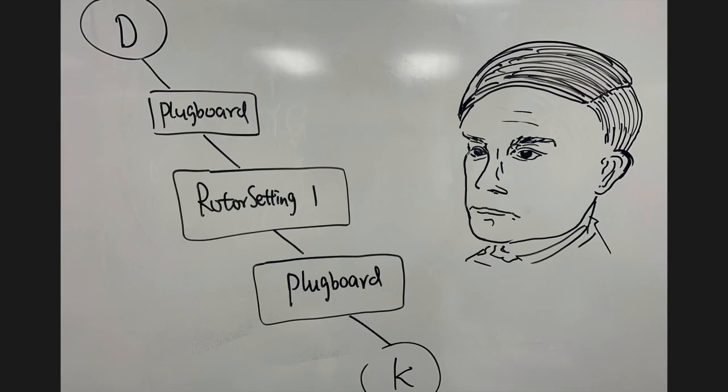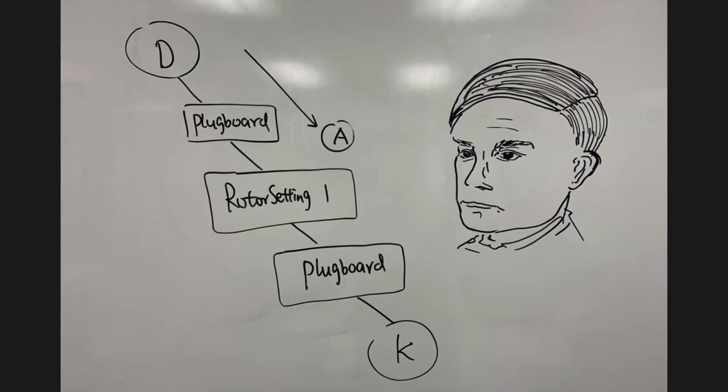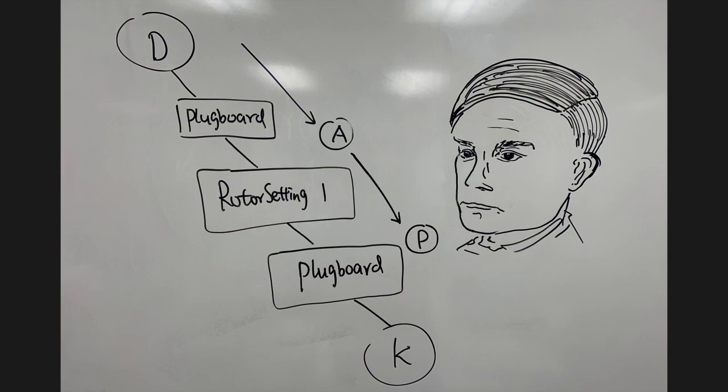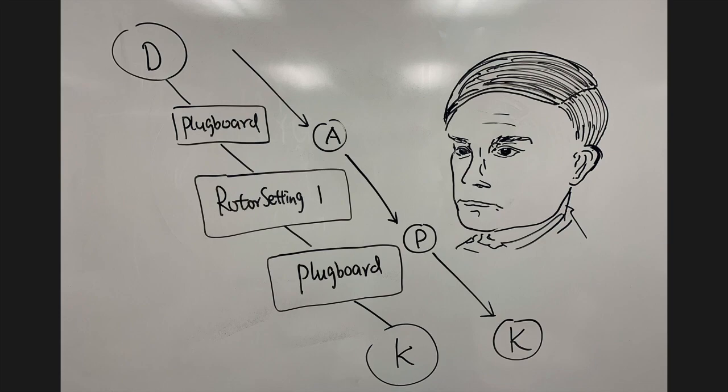Turing then tried out different settings on the Bombe machine. For example, he might try a setting where D is connected to A on the plugboard. He would then run this through a rotor setting, and then generate, let's say, P. Since the end result is K, we know that P and K are also connected on the plugboard.